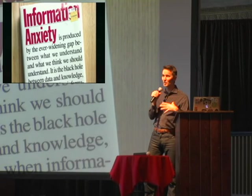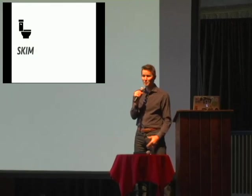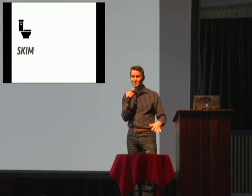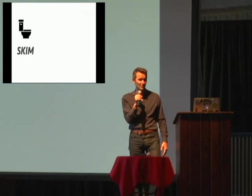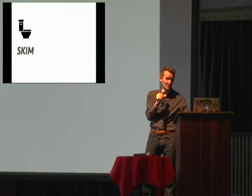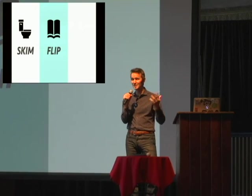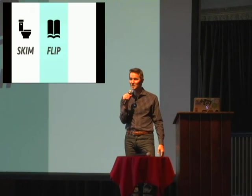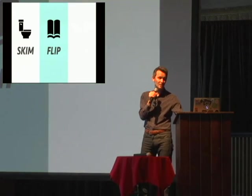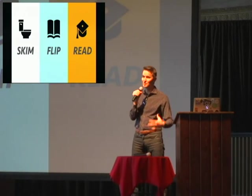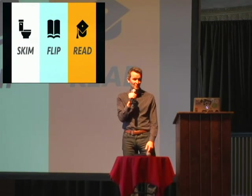He actually wrote the book itself with this in mind — he made it so that it could be read at different levels or different levels of intention. For example, if you had a very short amount of time, you could just skim the table of contents and you would actually learn something. Or if you had more time, you could just flip through the entire book — it's about 350 pages — and you could learn by flipping through it. Or if you had plenty of time, you could read and study every word.